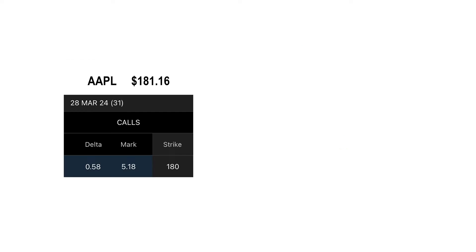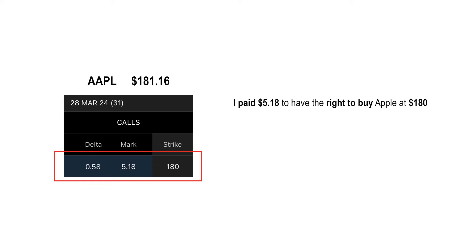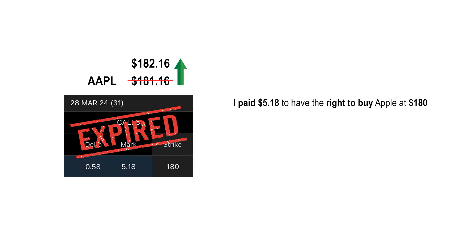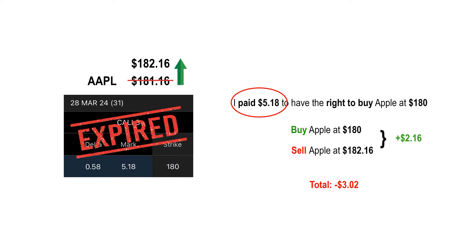Wait — what? How does that work? Well, remember the $180 call option that I bought? That gives me the right to buy Apple at $180 per share. At expiration, Apple is trading at $182.16. So if I were to exercise my option to buy Apple at $180 and sell it at its current trading price of $182.16, I make the difference, which is $2.16. But since I paid $5.18 for the option, that's where I lose the difference — which is $3.02. And since one contract equals 100 shares, the total comes out to a $302 loss.